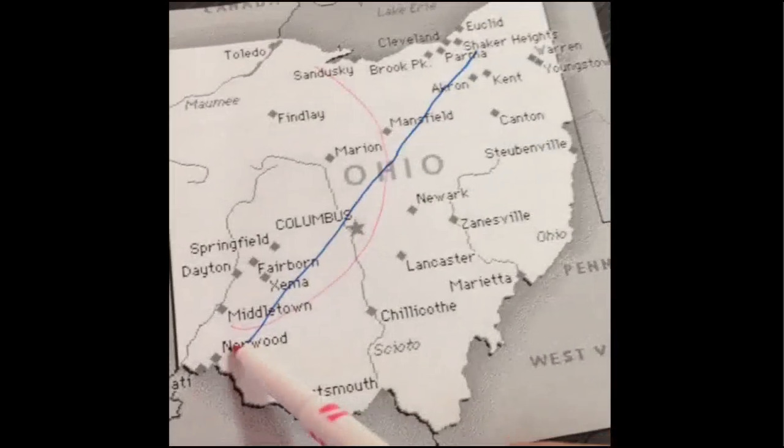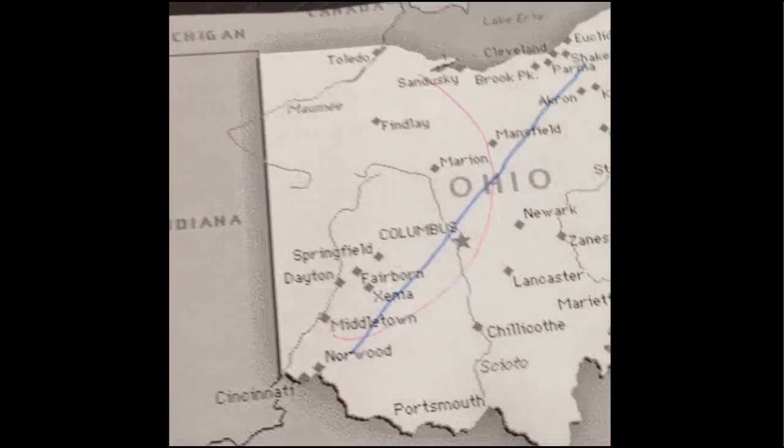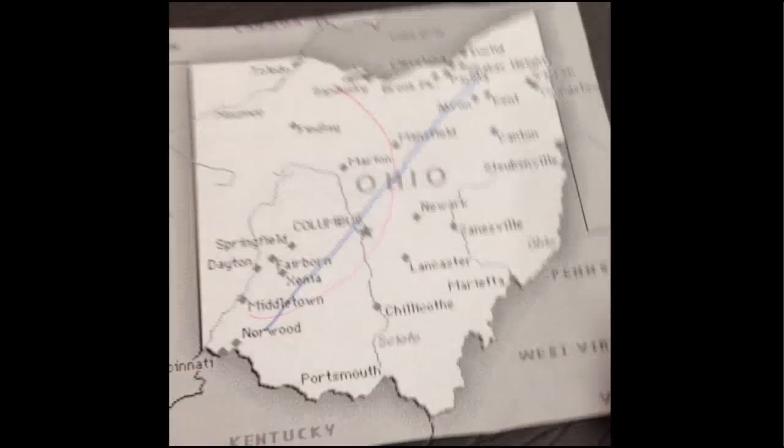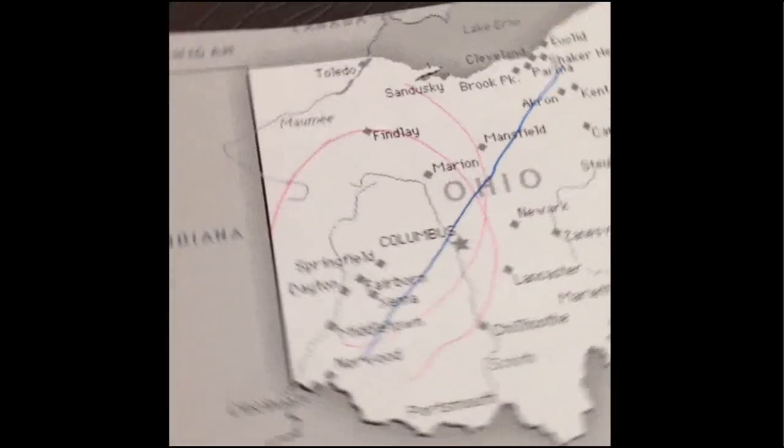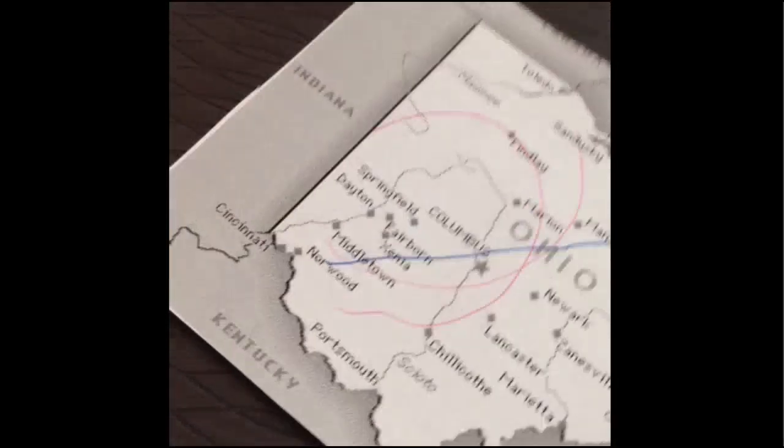Our line comes out curved. We can't seem to draw a straight line from one corner of Ohio to the other. Let's try again. Look at that, the same result, a curved line.